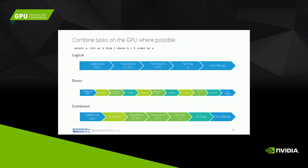Another idea is to combine your GPU tasks. Consider the query: SELECT A, B+C FROM T WHERE B > 5 ORDER BY A. The logical implementation involves a transform, then a remove_if, then a sort_by. In the naive plan, you transfer data to the GPU, run the transform, transfer it back, transfer it back again for the remove_if, and so on — many round trips. In the combined version, you transfer to the device once, run transform, then remove_if, then sort_by all in one go, and then transfer back. Eliminating these PCI transfers can increase query speed significantly.